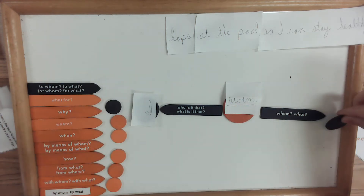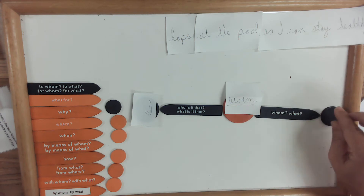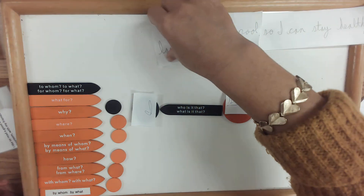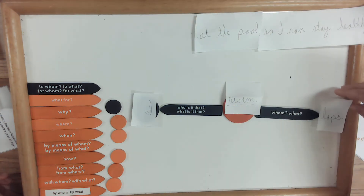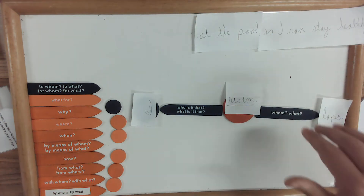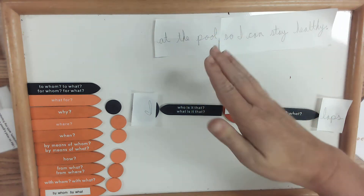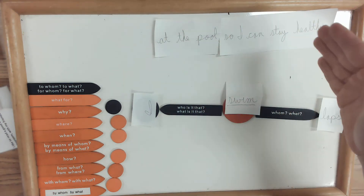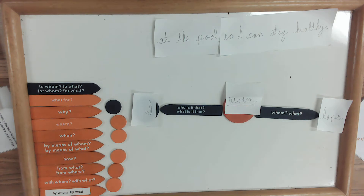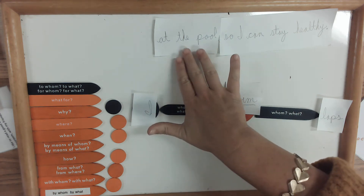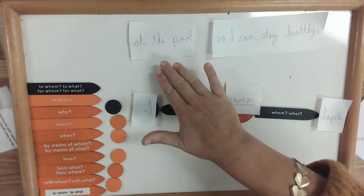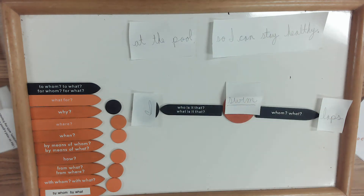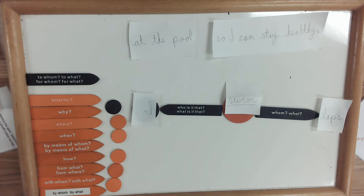One mistake a lot of kids make when they start doing the adverbial modifiers is they want to work ahead and cut every single word apart. That's not going to be helpful because many of the words go together, so we're going to look at them in pieces that make sense together. The next one is 'at the pool.'